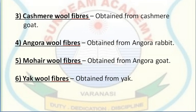Angora wool fiber is combed from the Angora rabbit; it is extremely soft, fluffy and warm. Mohair wool fiber comes from the fleece of the Angora goat; it is extremely lightweight and the Angora goat is found in hilly regions such as Jammu and Kashmir. Remember: Angora wool fiber comes from the Angora rabbit, whereas Mohair wool fiber comes from the Angora goat — don't get confused.